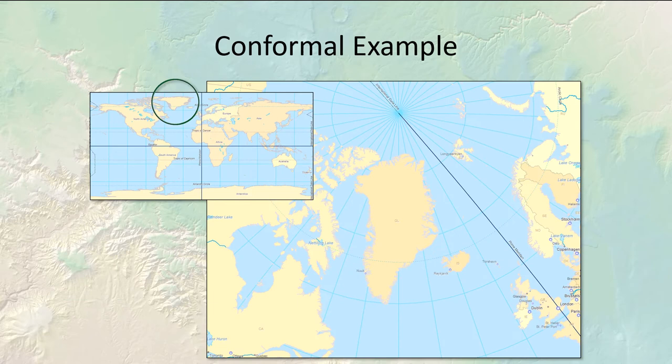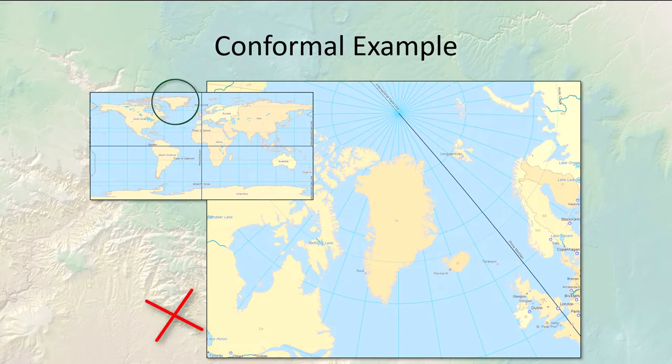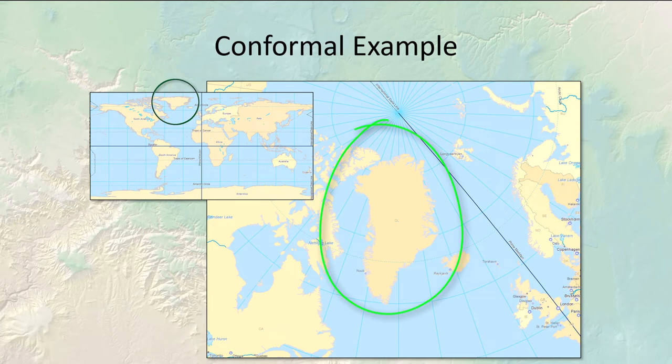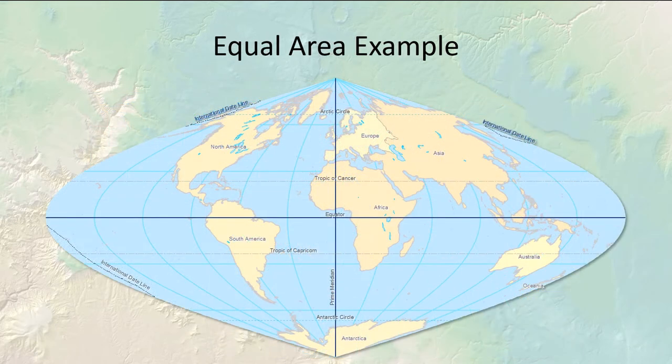For mapping you usually want a conformal projection; for analysis you typically want equal area, equidistant, or azimuthal projections. Conformal projections make the landscape look correct — take Greenland as an example: Greenland is famous for being way oversized in a geographic coordinate system, but if we use a conformal projection then the shape of Greenland looks correct, making a much more aesthetically interesting and defensible map. Equal area maps, on the other hand, can have shapes that are twisted and warped, but the area within each polygon is correct. This particular example is called the sinusoidal projection, one of the more famous equal area projections — a pseudo-cylindrical projection similar to a cylindrical projection.